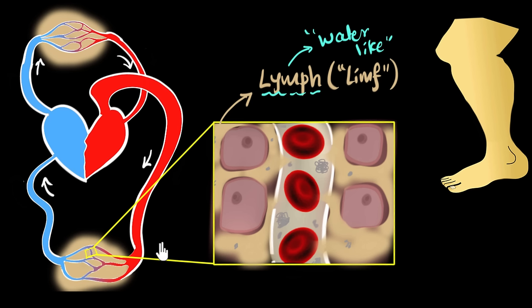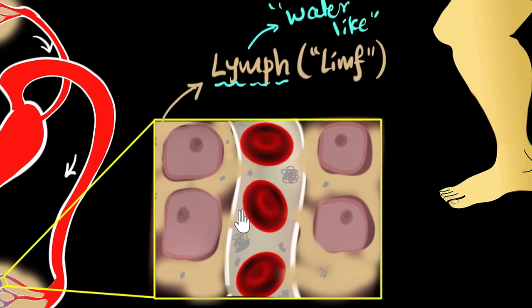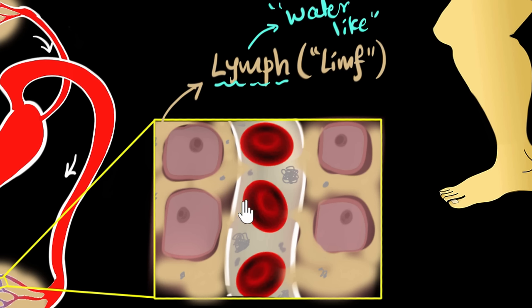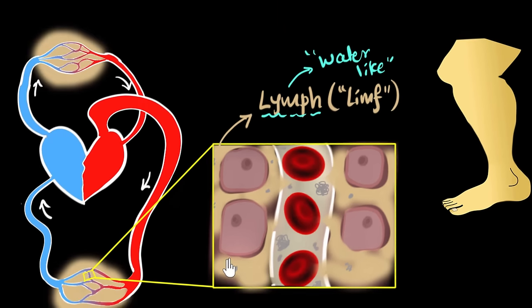Now before we talk about how our bodies tackle this — you might think this is such a bad design. If we don't want the plasma to leak out, why are there holes in the capillaries? Well, the holes are actually necessary. Cells aren't only exchanging gases like carbon dioxide and oxygen, which can easily pass through the walls — they're also exchanging nutrients like glucose, and producing waste products like nitrogenous waste that need to go back into the blood. These are big molecules that can only go through the holes. So capillaries need those holes to exchange substances, and since holes are absolutely necessary, there's nothing we can do about the plasma leaking out.